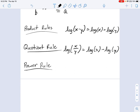And the last one is the power rule. If I have the logarithm of x to the n power, then that's equal to n times the logarithm of x. You just bring that exponent out, and you use it as a multiplier.